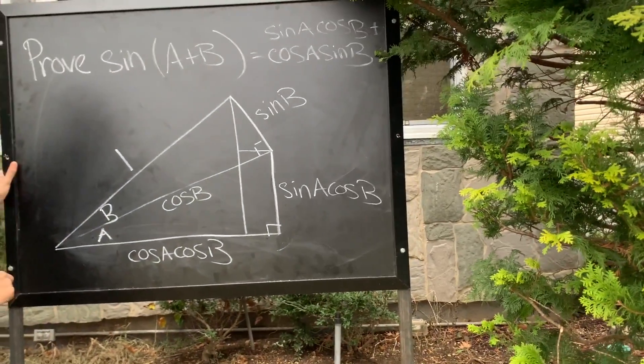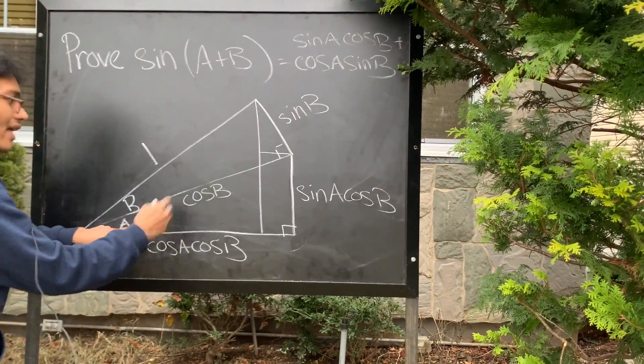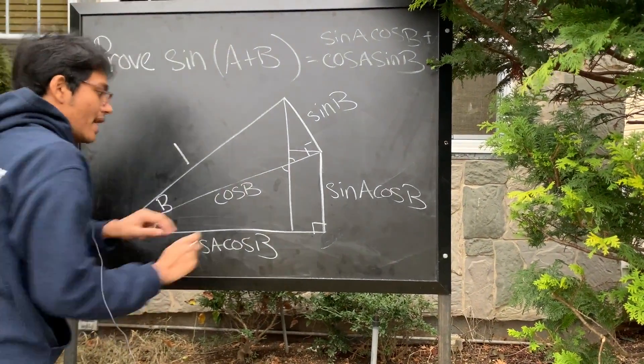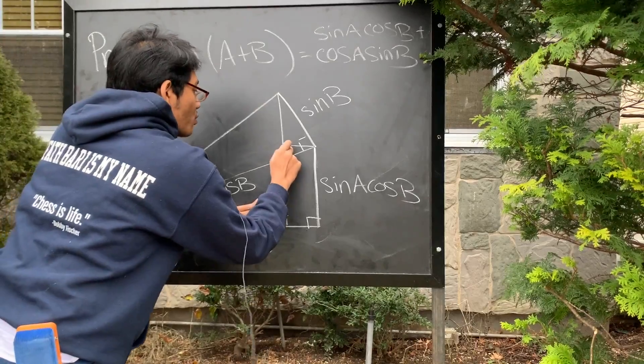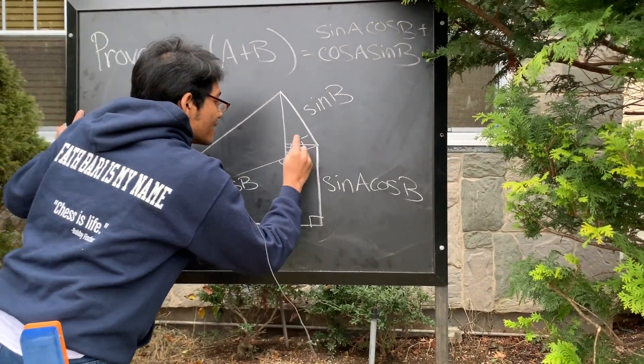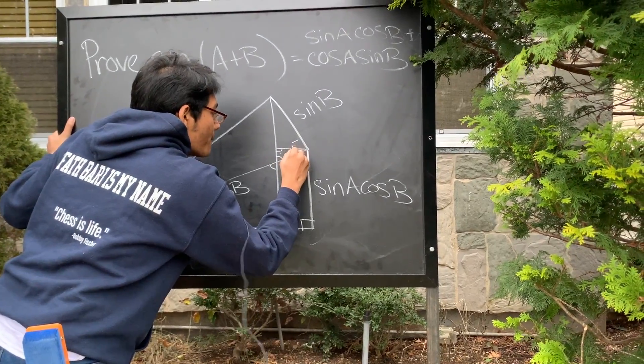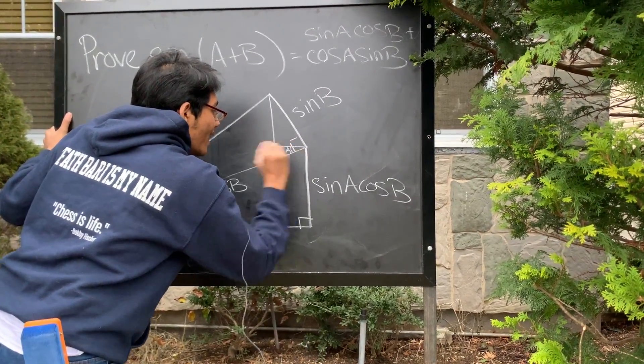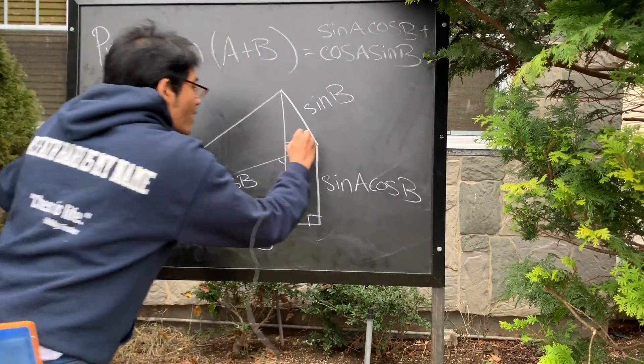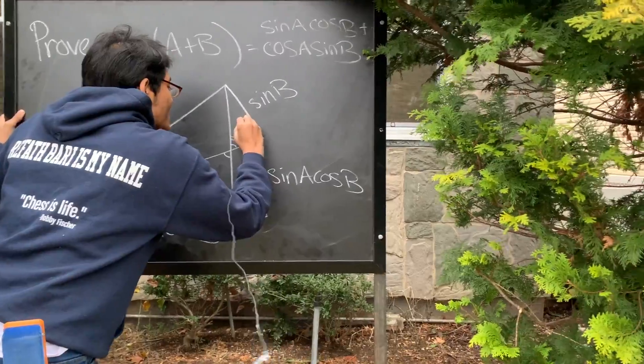If I draw this line and draw one more altitude right here, what do you see? Well, check it out. We have two similar triangles. These two angles are equal to each other and these two angles are right triangles. And so if this is A, this angle, this small angle over here must therefore also be A. And since this angle is A and this is a right angle, this must be 90 minus A.